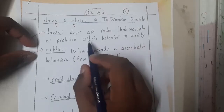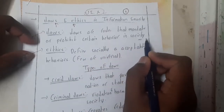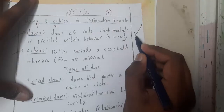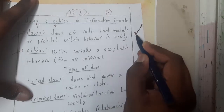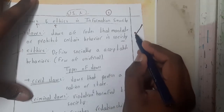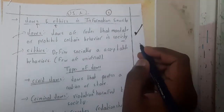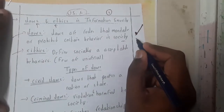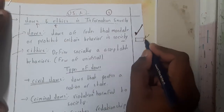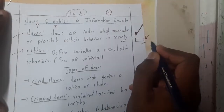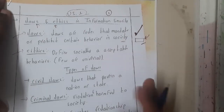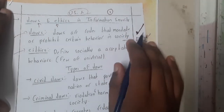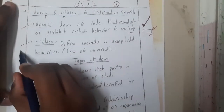Laws are something that everyone should follow — either forcibly or in some way. For example, a student carrying their hall ticket to an examination is a law. You should carry it; there is no other option. Even if you forgot, you can write a letter, but you are still required to carry it. That is what a law is.